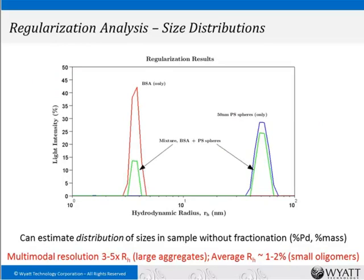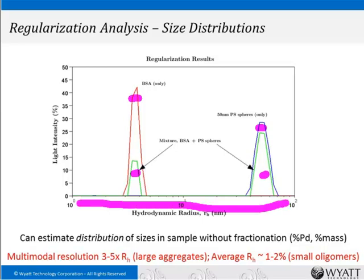Here's an example of regularization results: a mixture of BSA and polystyrene spheres. Measured individually, BSA appears at about 4 nanometers and the polystyrene spheres at about 50 nanometers. Mixed together, you can see these distinct peaks. Note that the size scale is logarithmic — to differentiate populations, their physical radius needs to differ by about a factor of 3 to 5. It's not a high-resolution technique, but quick and easy for identifying larger aggregates, with average RH accurate to 1–2%.